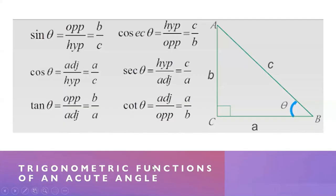Now let's talk about trigonometric functions of an acute angle. There are six trigonometric functions: the sine, the cosine, the tangent, the cosecant, the secant, and the cotangent.